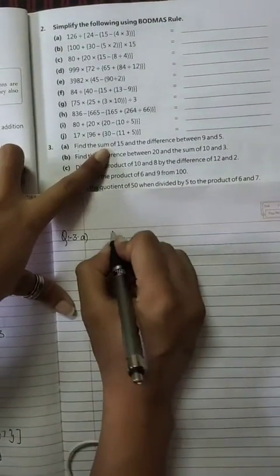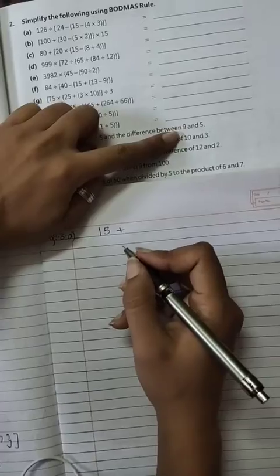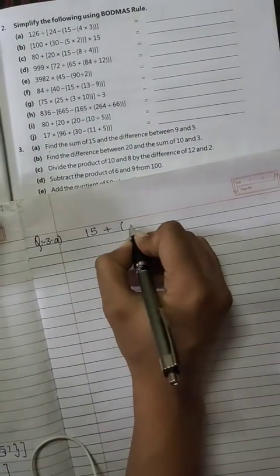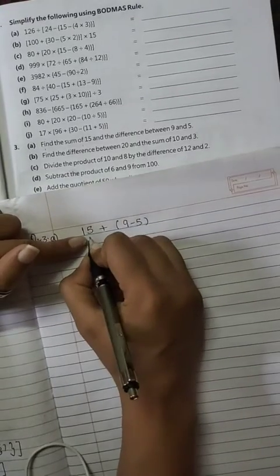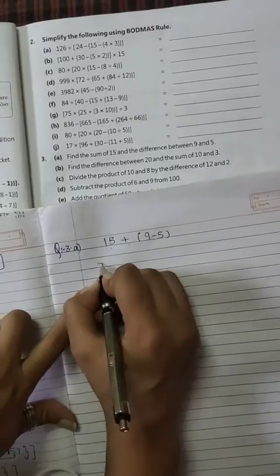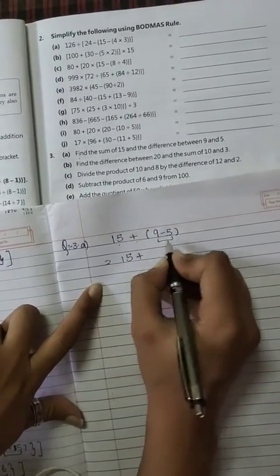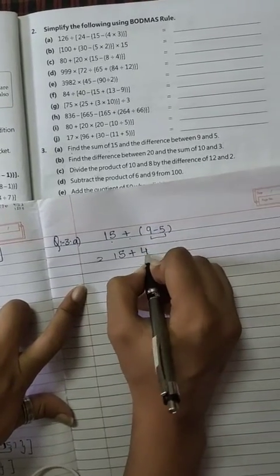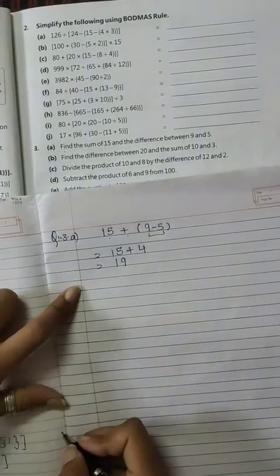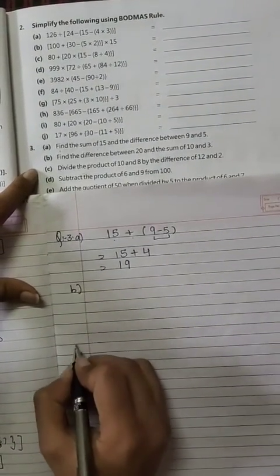So, sum of what? 15 and what difference? Whose difference? Difference means what? Subtraction, means 9 or 5's difference. And what do we do with 15? Sum means what do we do? Plus. Now again bracket is to be solved here first. So 9 minus 5 is what? 4. So 15 plus 4 is what? 19. Next, B part you will do on your own.